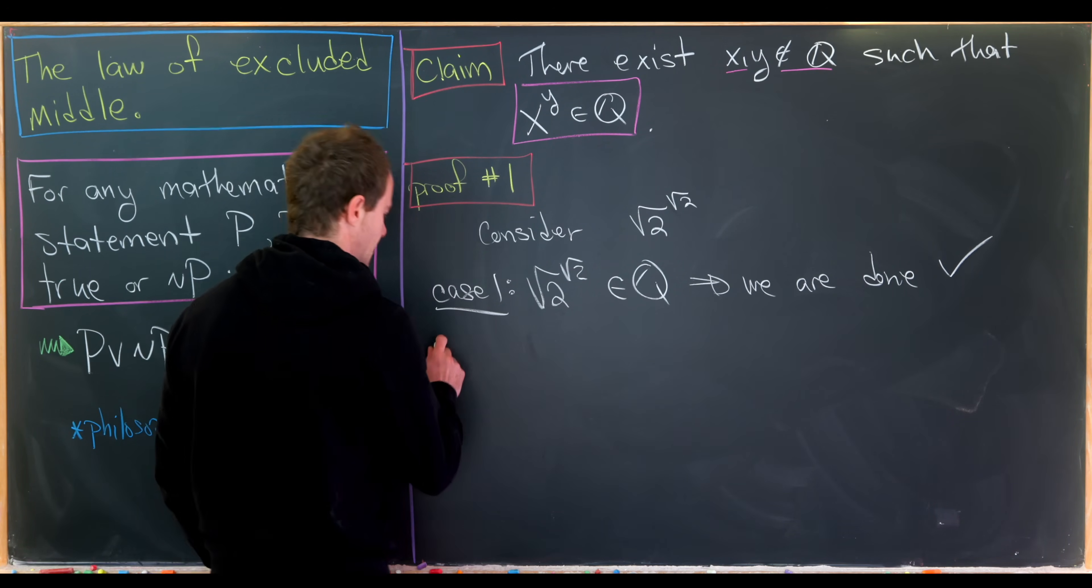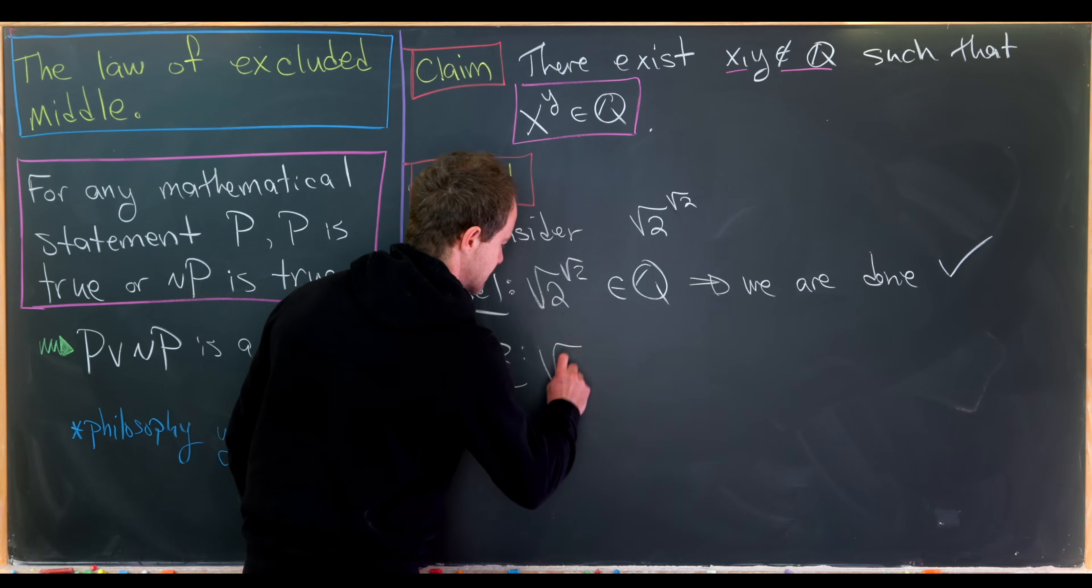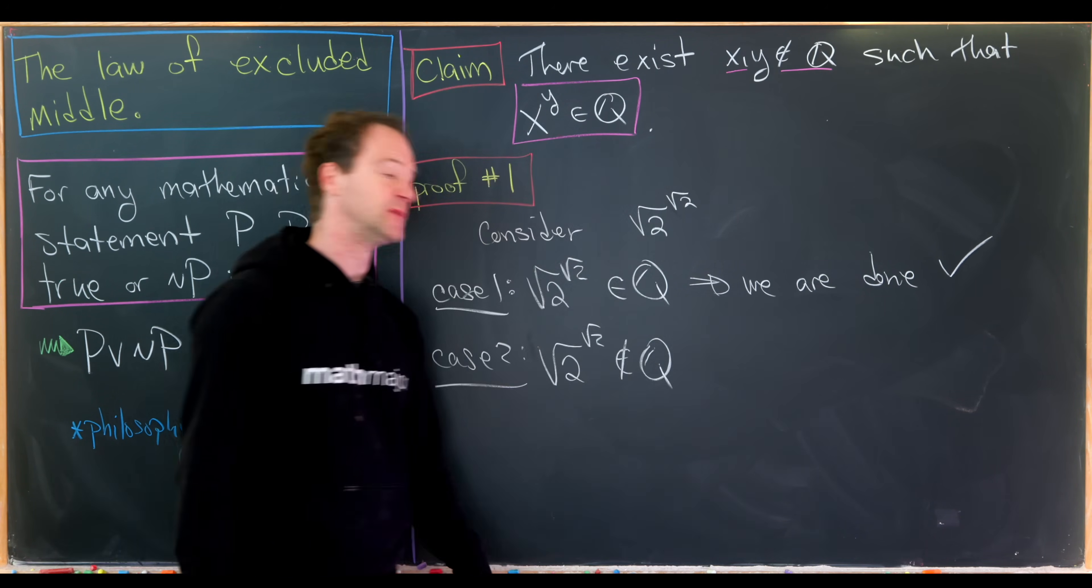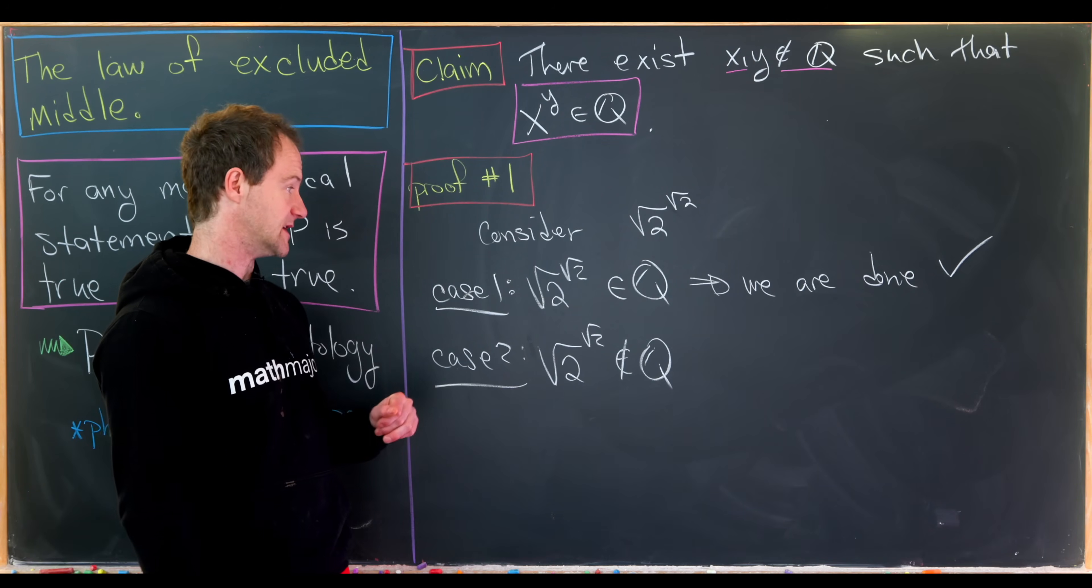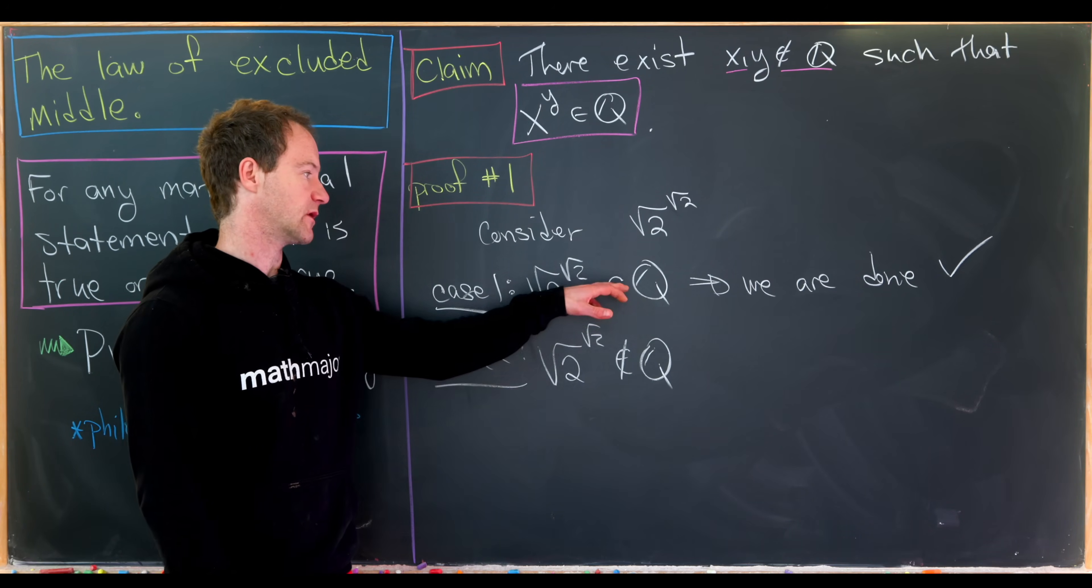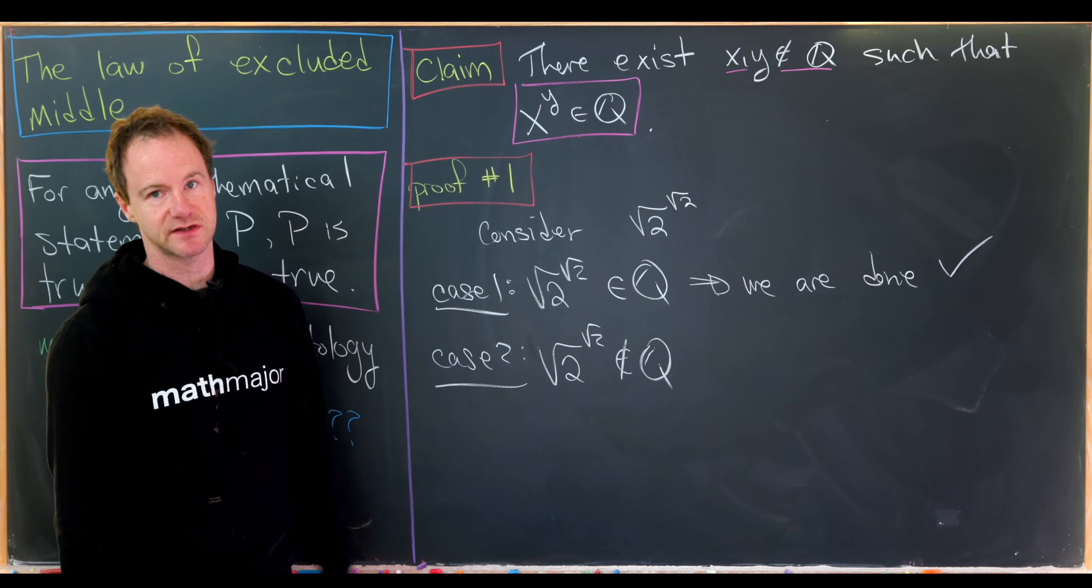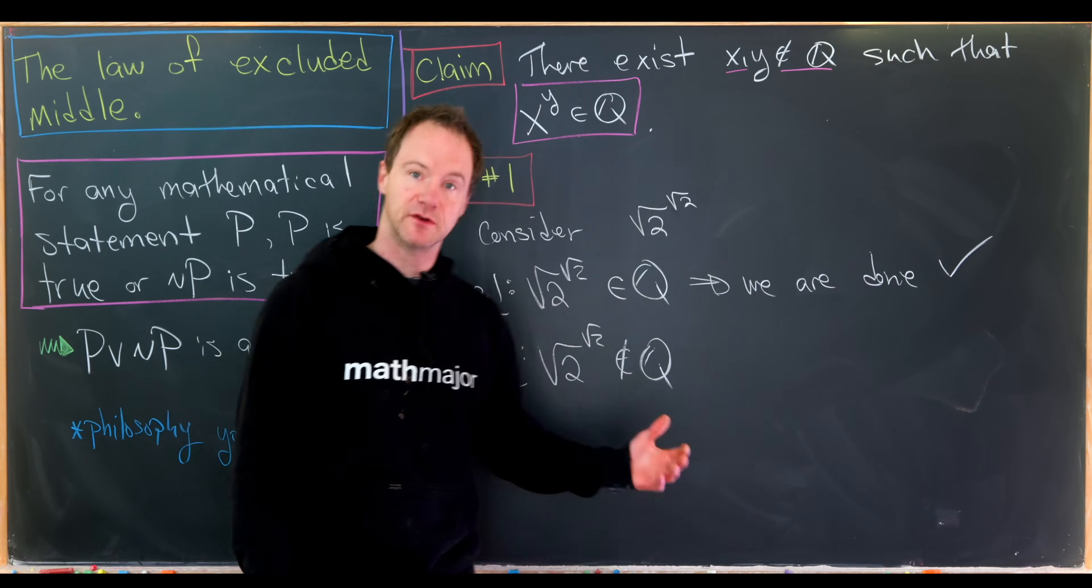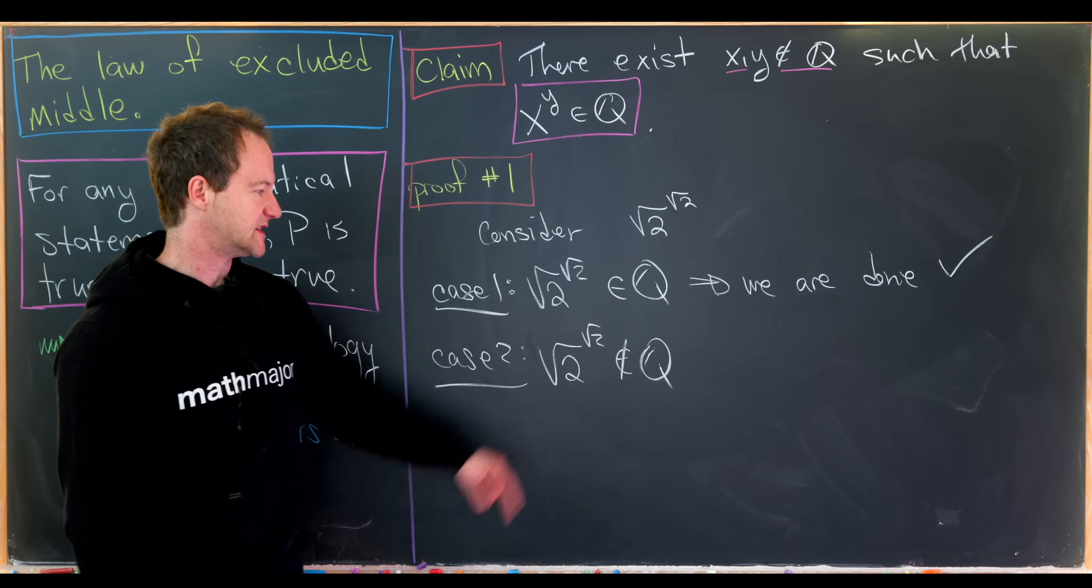Okay, but what if it's not rational? So that would be case number two. So the square root of 2 to the square root of 2 is not rational. And this is where we've applied the law of excluded middle. Our statement is the square root of 2 to the square root of 2 is rational. And so this would be not our statement. So one of them must be true by this law of excluded middle over here. Okay, well, what happens if this is not rational?